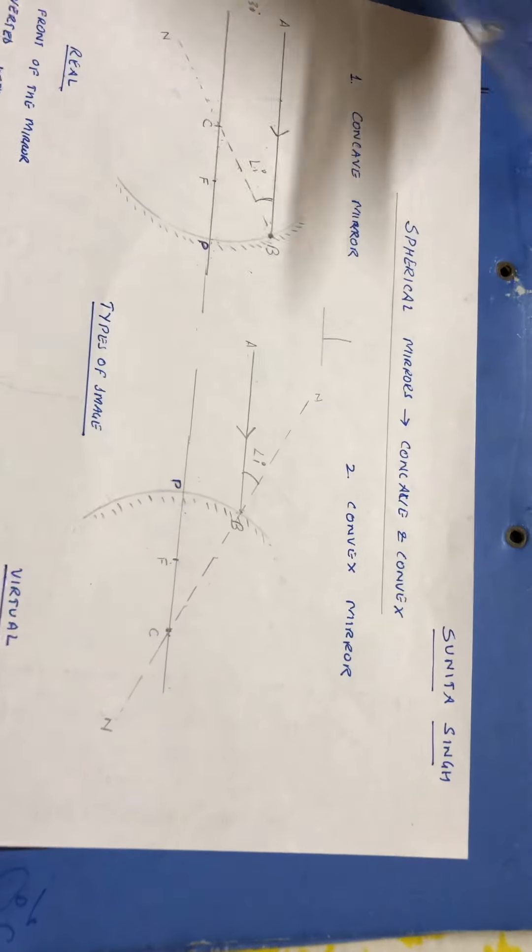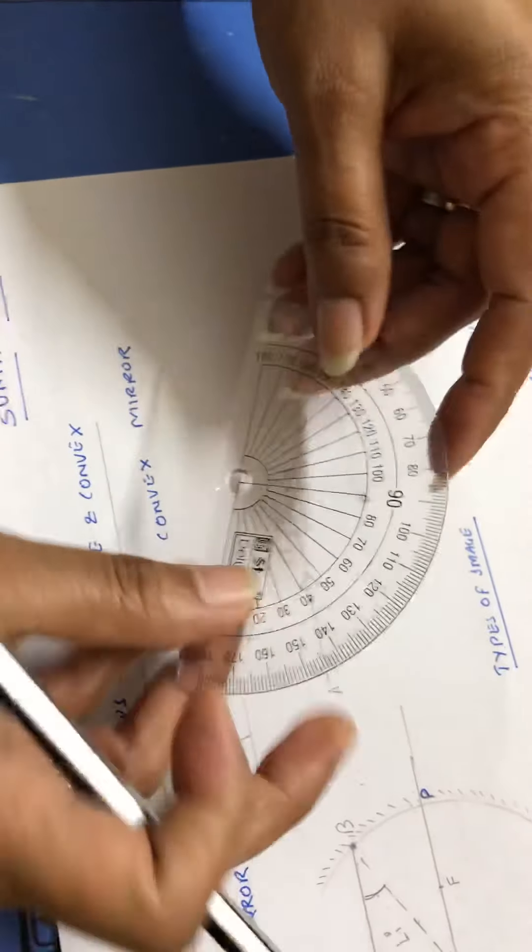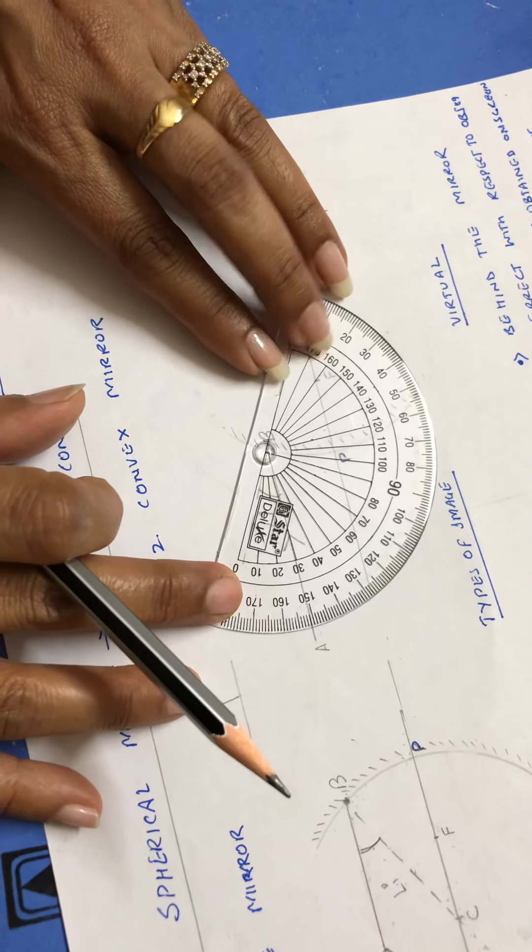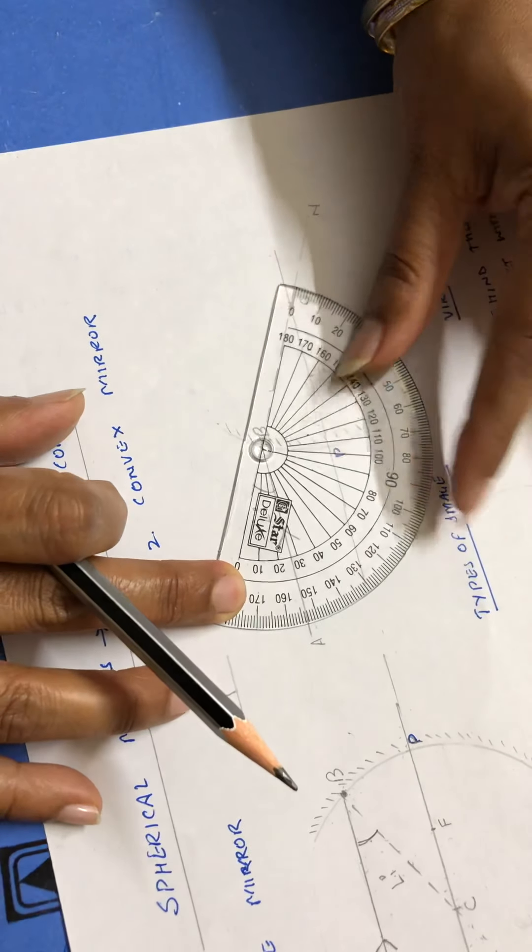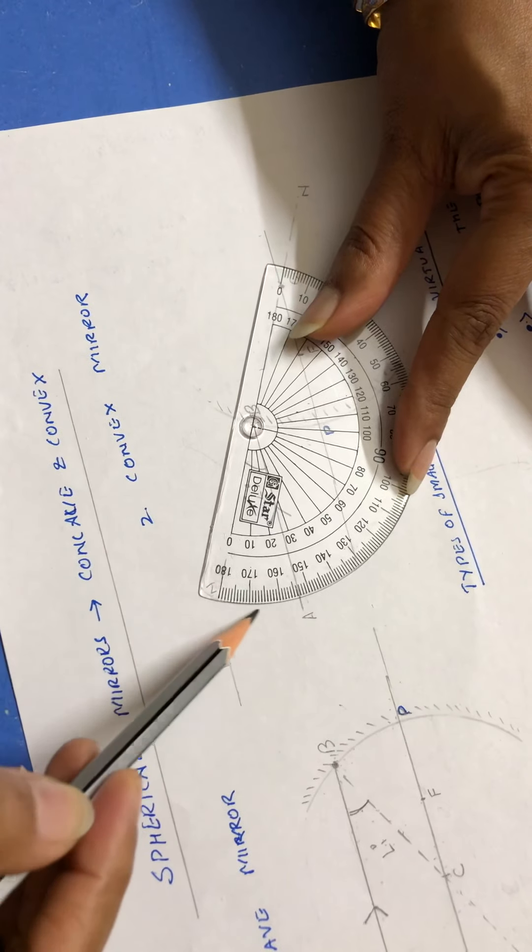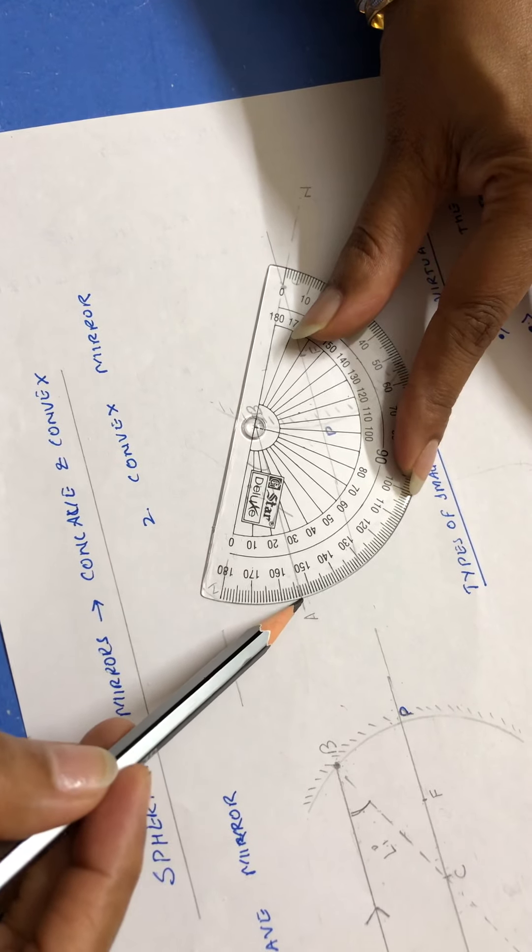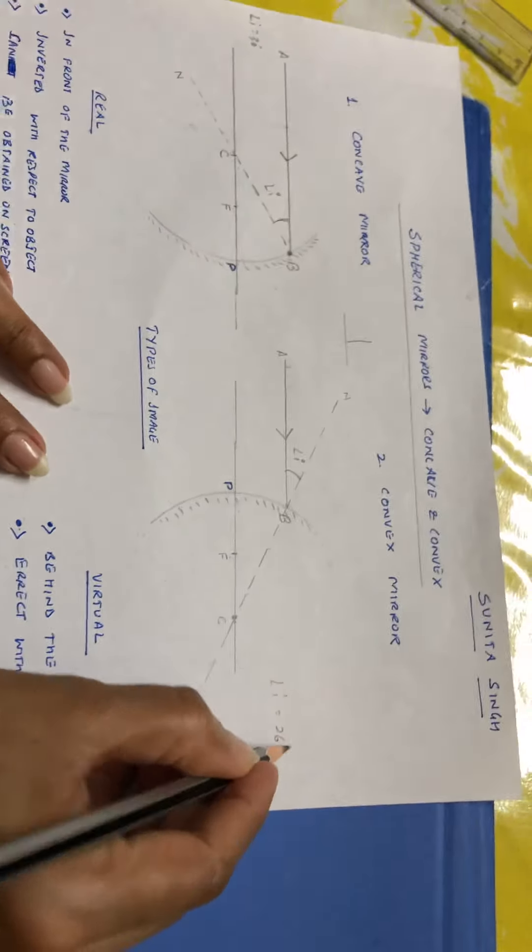Let us measure this one. In this case, this is the normal. You will have to twist it a little bit. Because you have to always place the protractor in such a way that its base coincides with the normal. It has coincided with the normal. Now measure from here. 0, 10, 20, 26 degrees. So in this case, your angle i is 26 degrees.